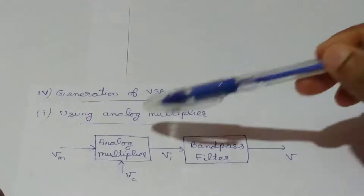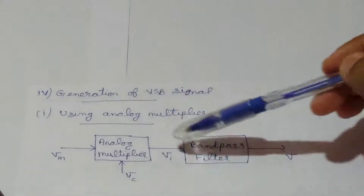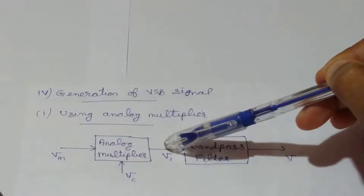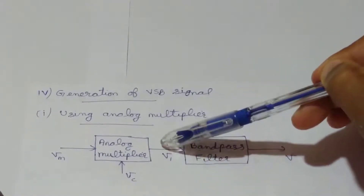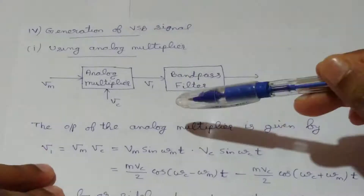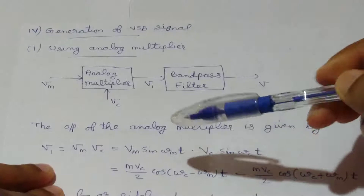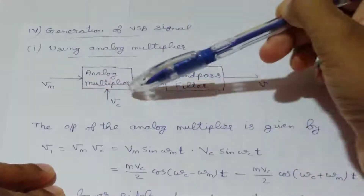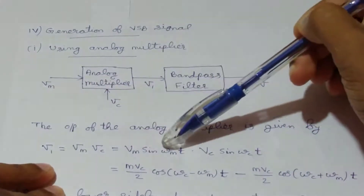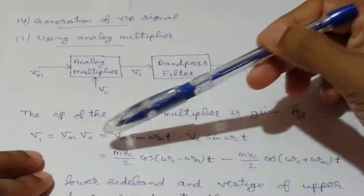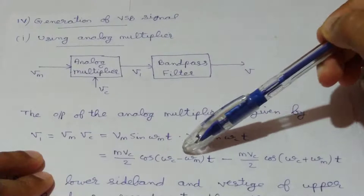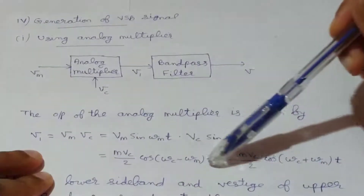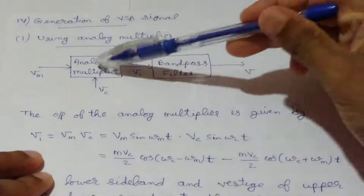We can obtain the vestigial sideband signals by using this arrangement. The first block is an analog multiplier, and at the output of the analog multiplier we will get the double sideband suppressed carrier signal. The output V1 is equal to Vm into Vc, which equals Vm sin(ωm·t) into Vc sin(ωc·t), and that equals (MVc/2)cos((ωc − ωm)t) minus (MVc/2)cos((ωc + ωm)t). This is our double sideband suppressed carrier signal.